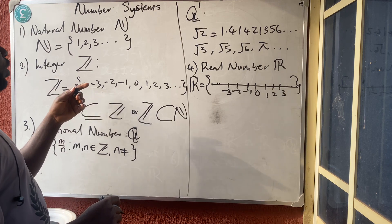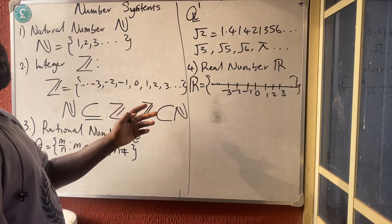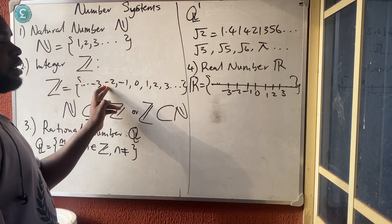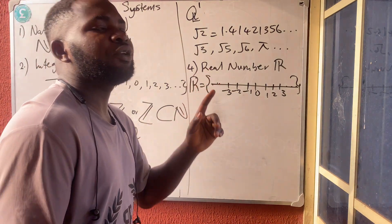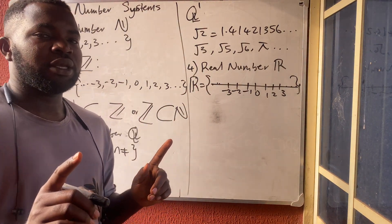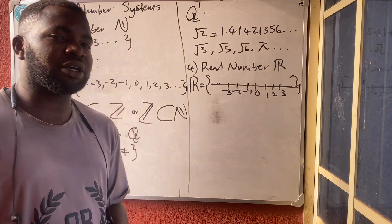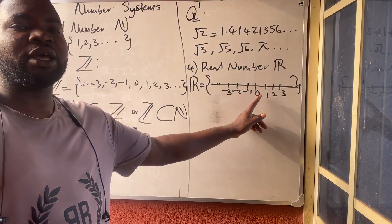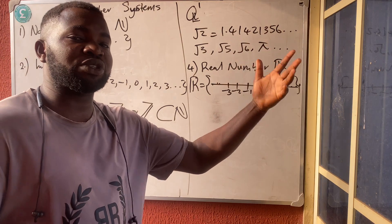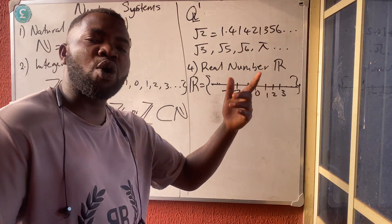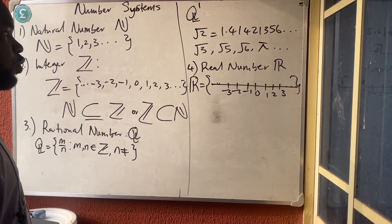After 1 is 2, after 2 is 3, after -1 is 0. But with real numbers, nobody knows the next number after any number you can mention. For example, if you mention 0, nobody knows the next number after 0. If I say 0.1, another person says what about 0.001, another says what about 0.0000001. Between any two real numbers there are uncountable numbers.